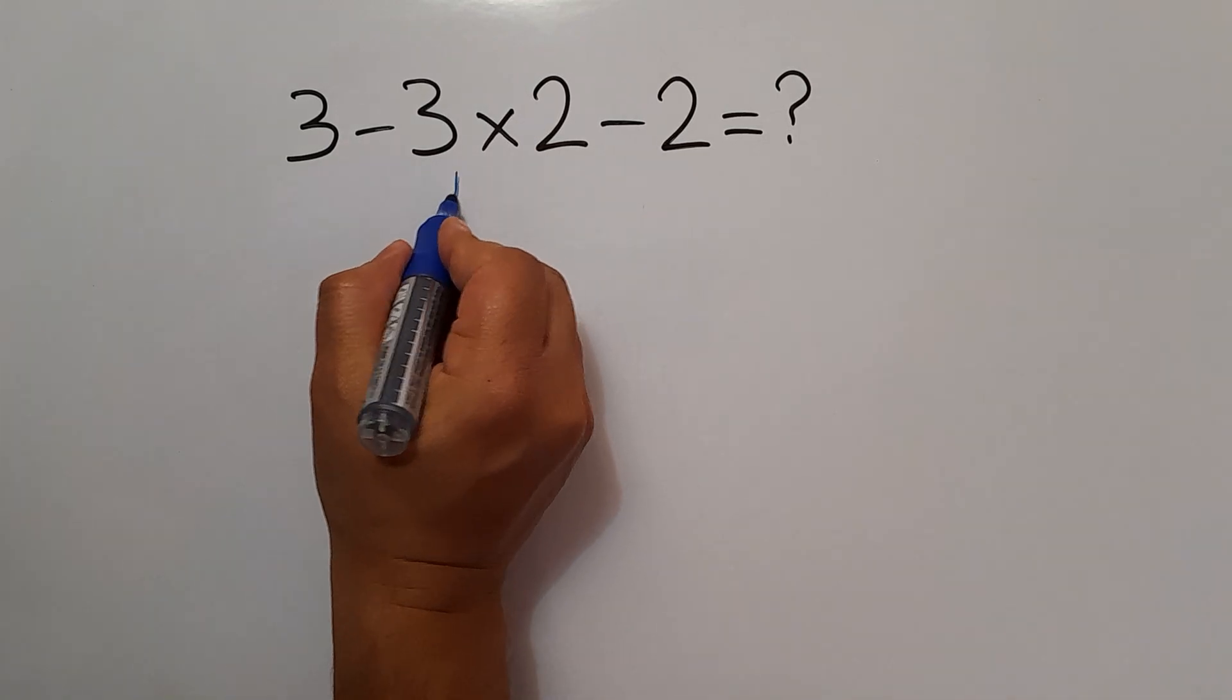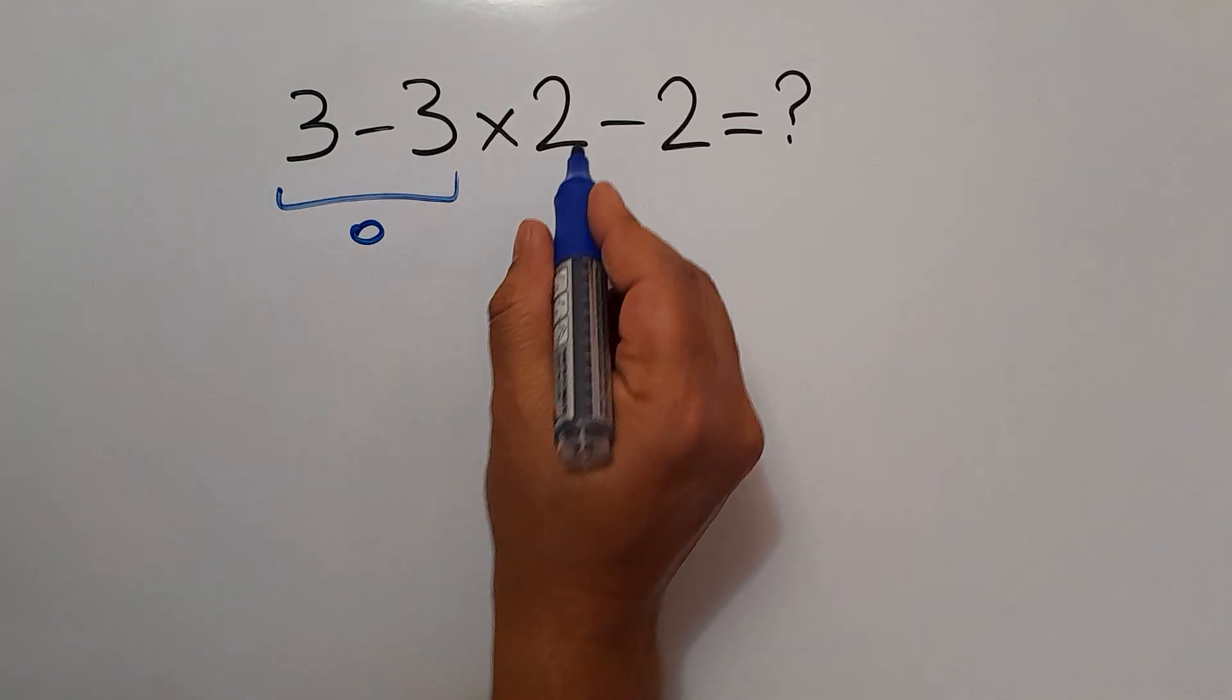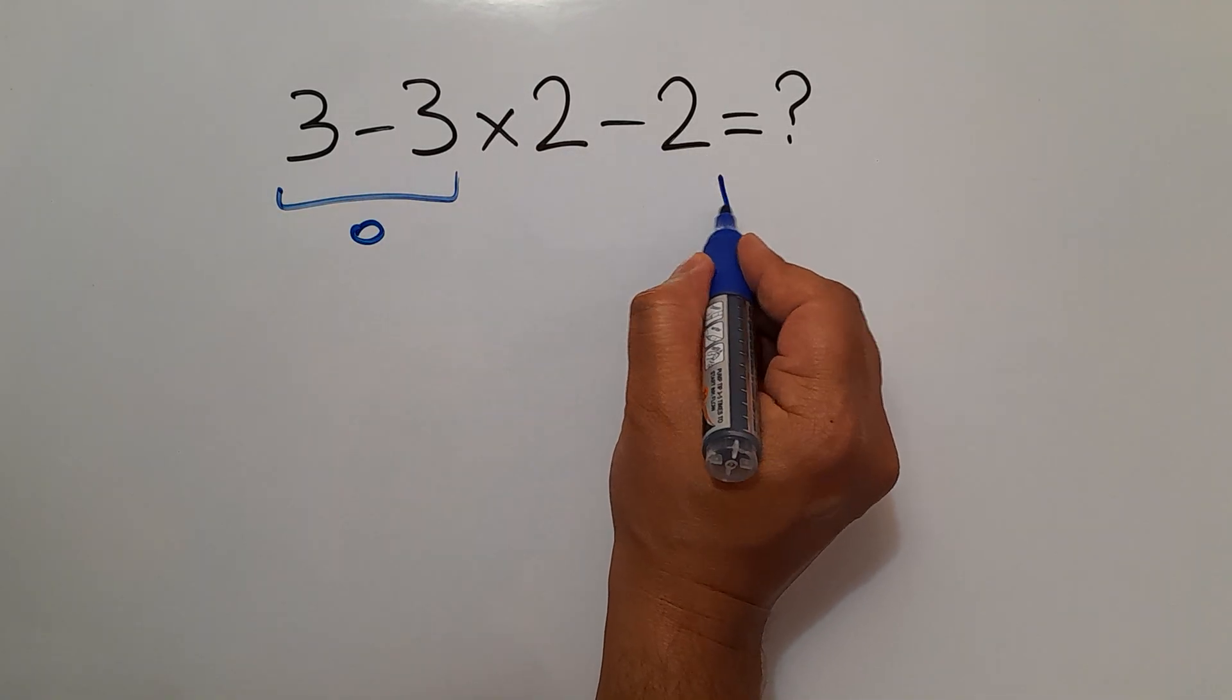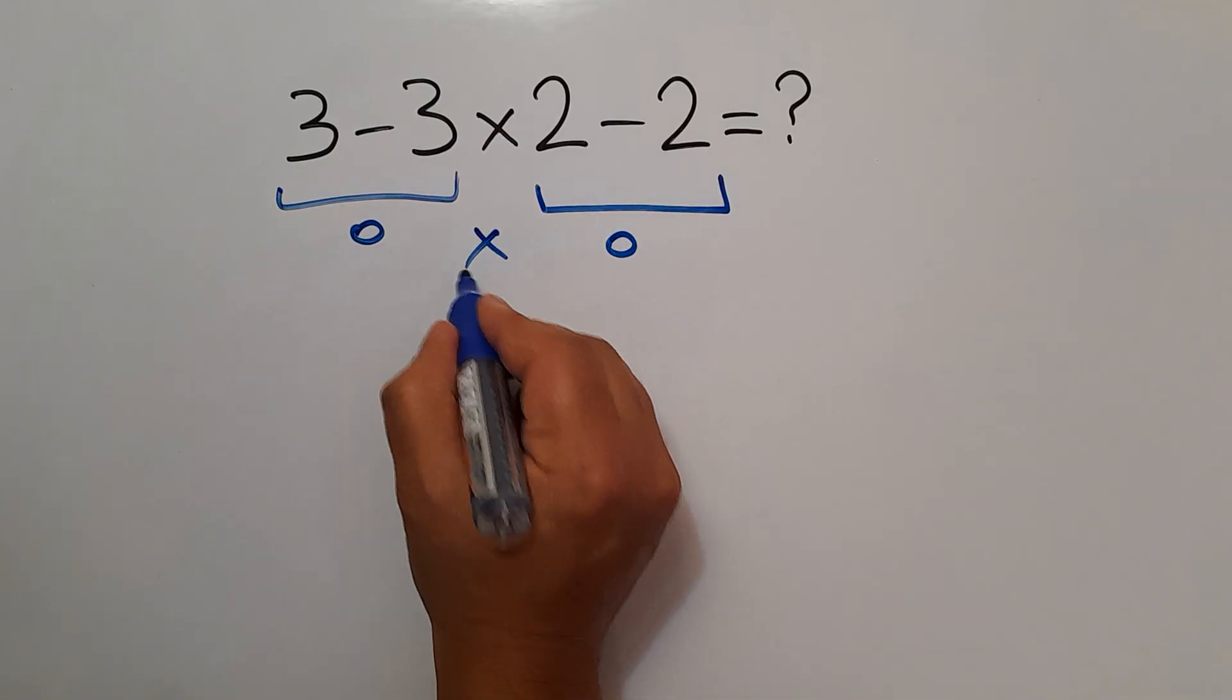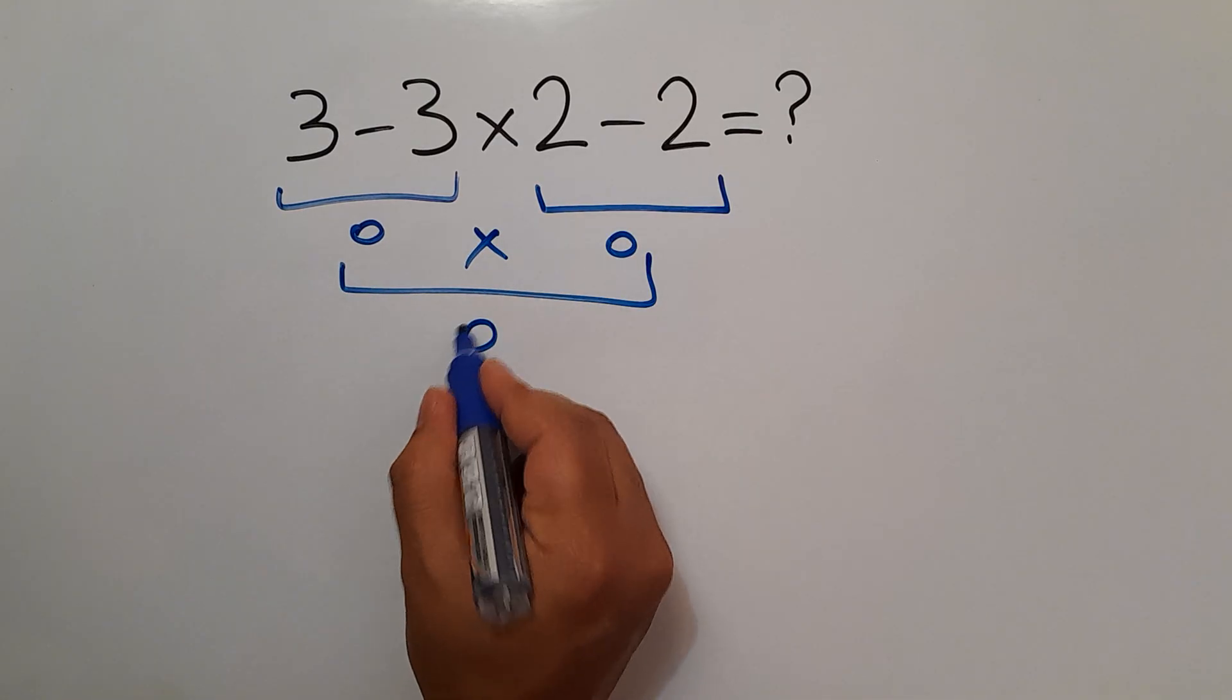3 minus 3 gives us 0, 2 minus 2 is equal to 0, and 0 times 0 gives us just 0.